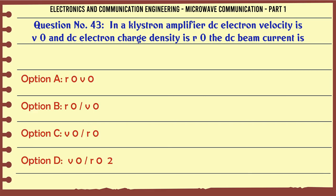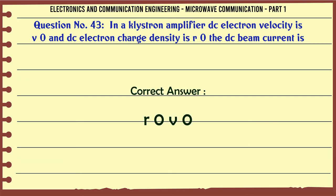In a Klystron amplifier DC electron velocity is V0 and DC electron charge density is ρ0. The DC beam current is: A. ρ0 V0, B. ρ0 / V0, C. V0 / ρ0, D. V0 ρ0². The correct answer is ρ0 V0.